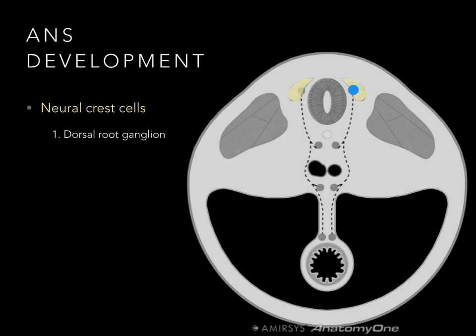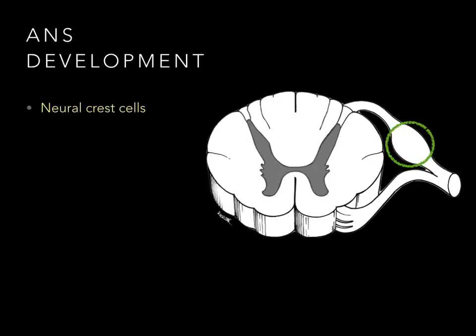Some neural crest cells migrate only a small amount — just one room to the next — and become the dorsal root ganglia, where they take all sensory information from the associated dermatomes and visceral sensory neurons and send it into the neural tube. In a cross-section of the spinal cord, the dorsal root ganglion is shown in green, with the cell body of the pseudounipolar neuron in the middle. Those cells are the neural crest cells that became dorsal root ganglia cells.